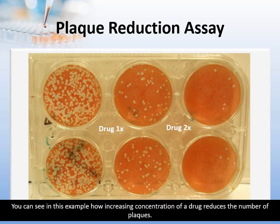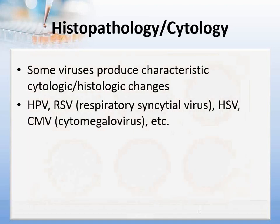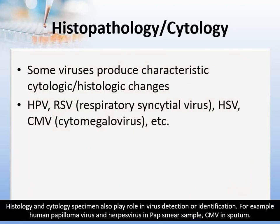You can see in this example how increasing concentration of a drug reduces the number of plaques. Histology and cytology specimens also play a role in virus detection. For example, human papillomavirus and herpesvirus can be identified from Pap smear samples, and CMV from sputum samples.